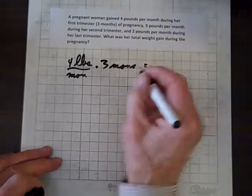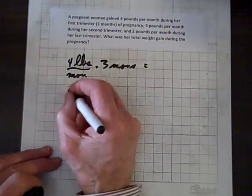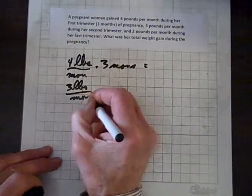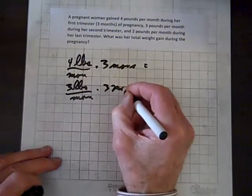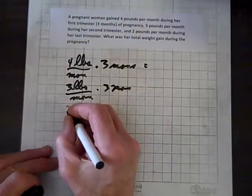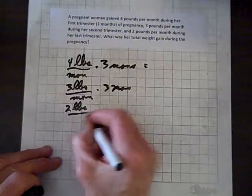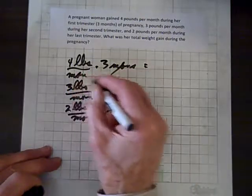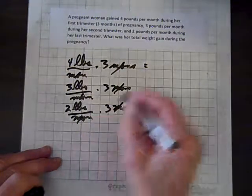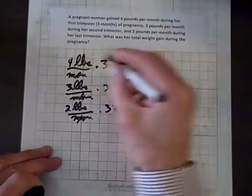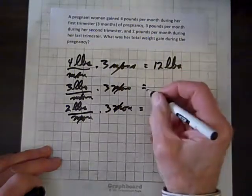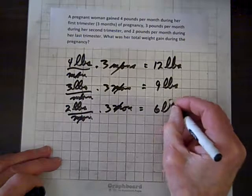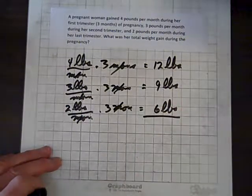That's 4 pounds per month times 3 months. 3 pounds. And we'll make a chart equals. And then she had 3 pounds per month during the next trimester. So, 3 pounds per month times 3 months. And finally, 2 pounds per month during her final trimester, which is 3 months. And notice, the months divide out. And 3 times 4 is 12 pounds. And 3 times 3 is 9 pounds. And 2 times 3 is 6 pounds.